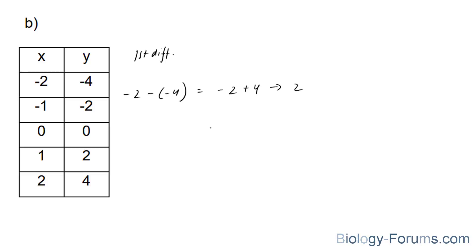0 minus negative 2 is equal to 0 plus 2, which is therefore 2. 2 minus 0 is positive 2. And 4 minus 2 is positive 2.